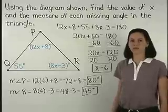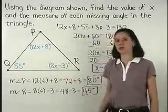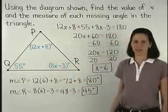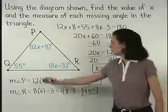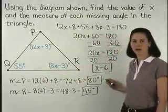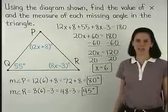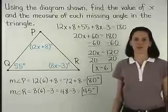Finally, we can check our answer by making sure that the three angles of the triangle add to 180 degrees. 55 plus 80 is 135 plus 45 is 180. So our answer checks.